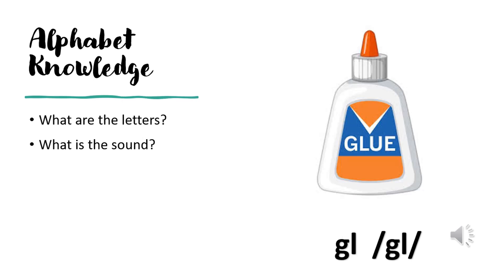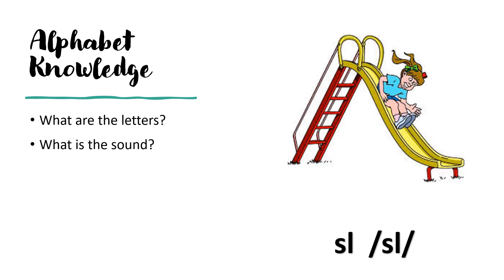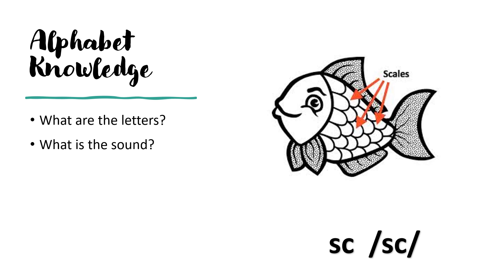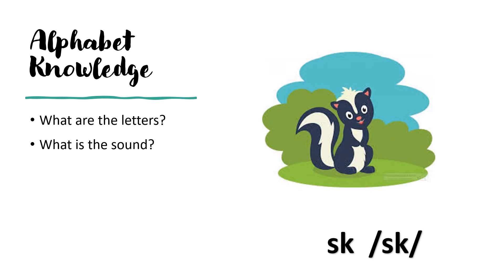What are the letters? G-L. What is the sound? G-L. What are the letters? S-L. What is the sound? S-L. What are the letters? S-C. What is the sound? S-K. What are the letters? S-K. What are the sounds? S-K.